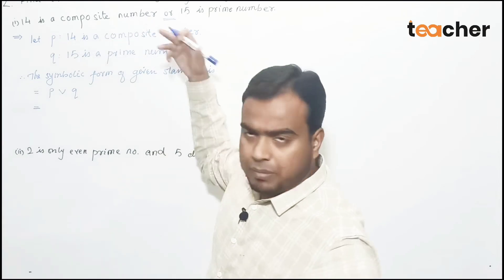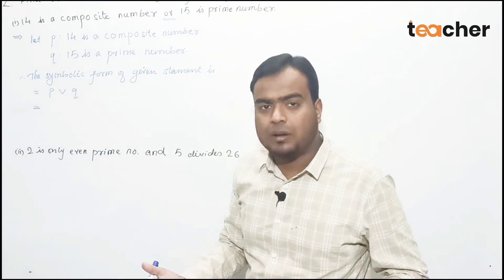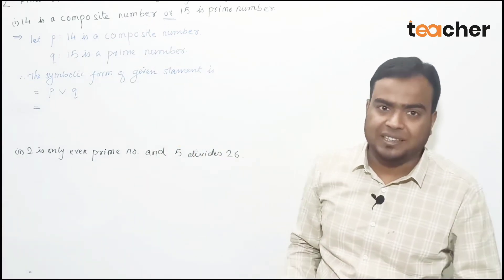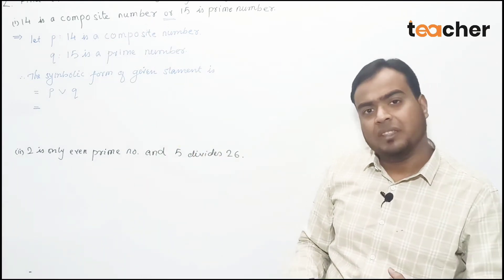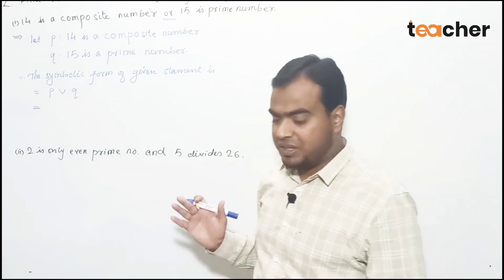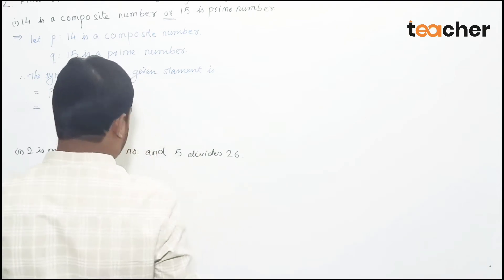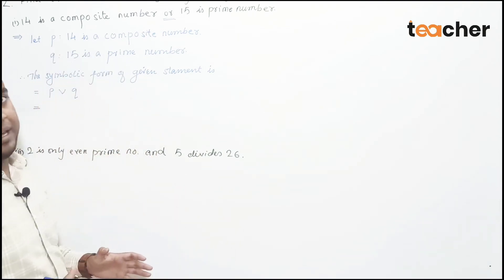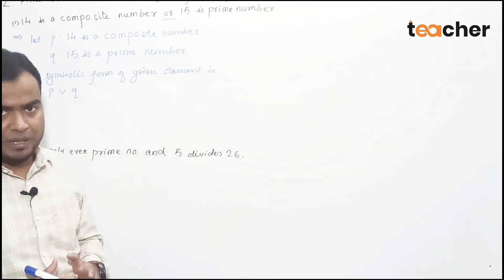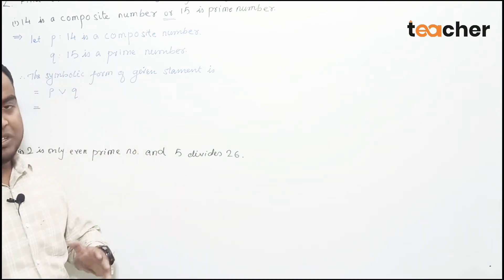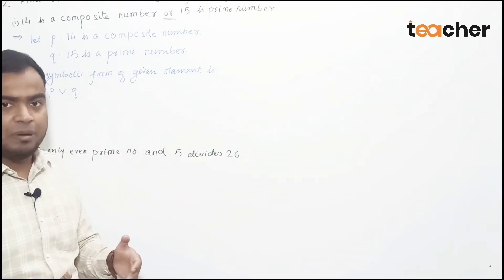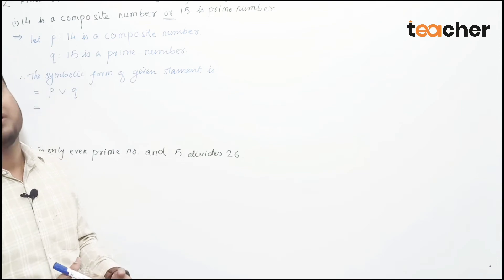First: '14 is a composite number.' Obviously we can factorize 14, therefore it is a composite number. A composite number is a number that can be factorized — students who have studied mathematics know that a composite number is one which can be divided by factors other than 1 and itself.